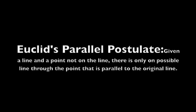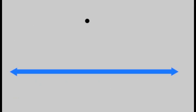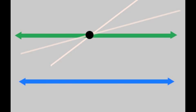You also need to know about Euclid's parallel postulate. All that says is that if we have a line and a point that's not on that line, there is only one line that we can draw through that point that is parallel to the original line. There's only one line we can draw through it that's parallel — any other line won't work.